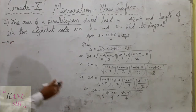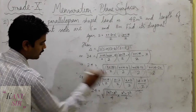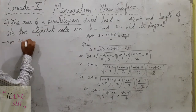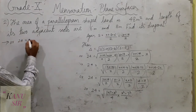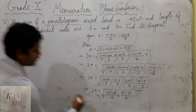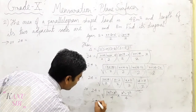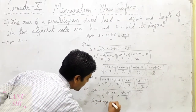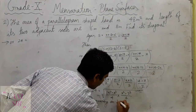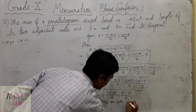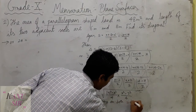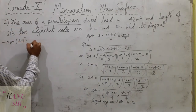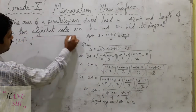Now everything is here and we need to solve. That is 24 equals the product under the root. Squaring on both sides, we get 24² equals the expression inside, with the square root removed.